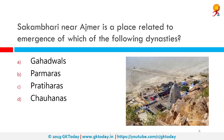Shakambhari Nagaur is a place related to the emergence of which dynasty? That would be the Chauhanas. The correct name is Chauhanas of Shakambhari, colloquially known as Chauhanas of Sambhar. They were an Indian dynasty that ruled parts of present-day Rajasthan and neighboring areas between the 7th and 12th centuries. The territory ruled by them was known as Sapadalaksha.